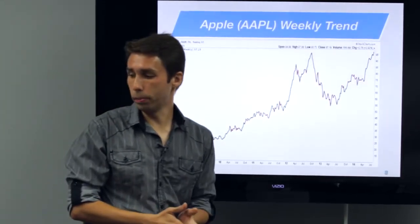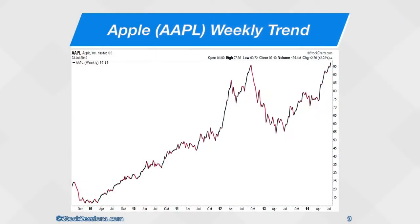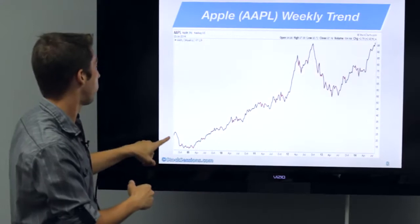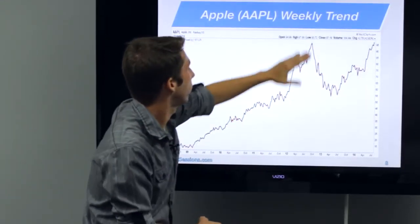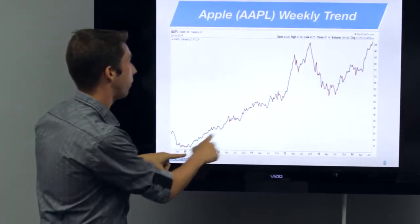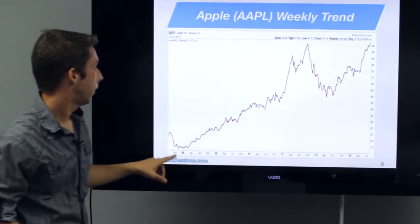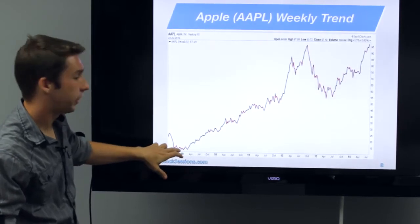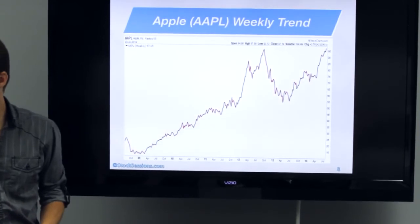This is the same chart of Apple, but this time we're showing it as you would see it on your charts if you pulled up Thinkorswim or any other TD Ameritrade or charting platform. Left to right, higher highs — sometimes it goes way down, but that's your trend basically, from left to right. This is 2009 to 2014. Apple in this case moved from $15 per share to $95. That is clearly an uptrend.